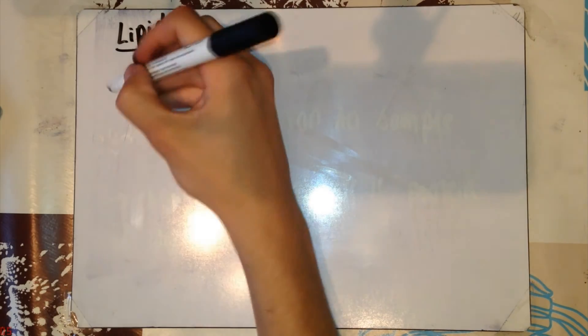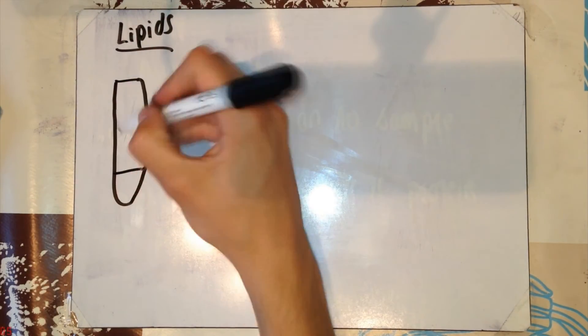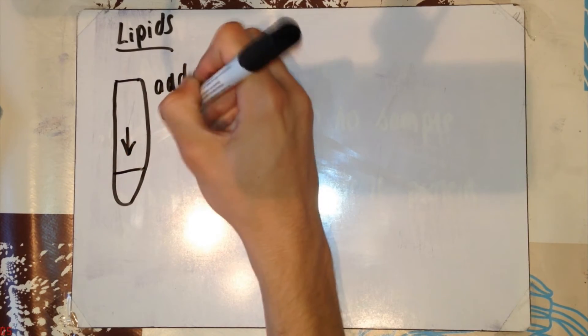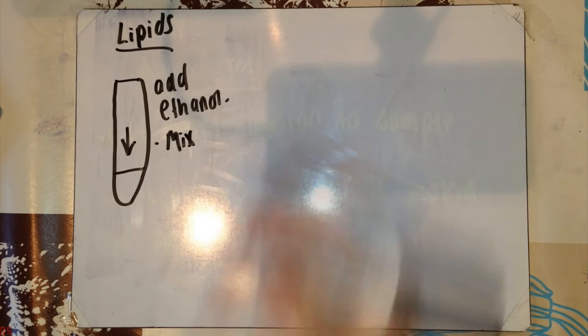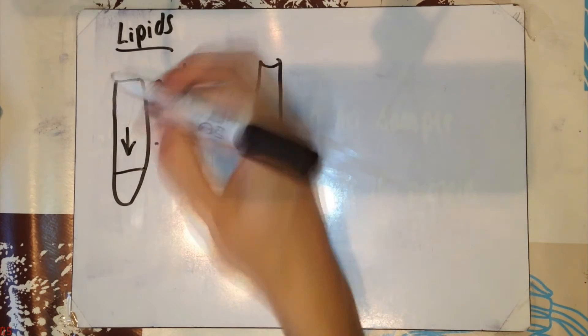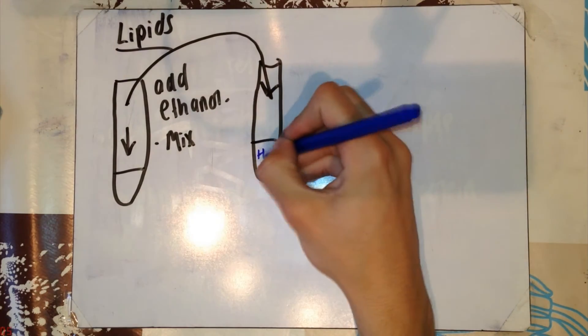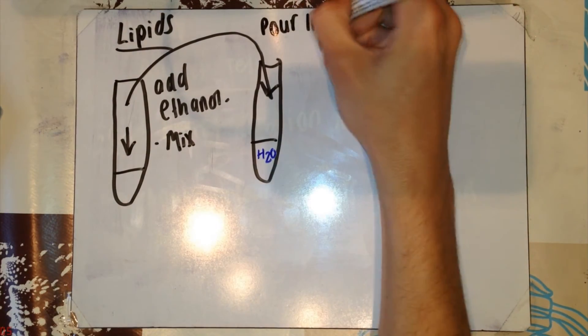Now, the test for lipids. So, you have your solution you believe may contain lipids in a test tube. There are a number of steps to this test. First of all, add ethanol to this solution and then mix it. Now, have distilled water in a clean test tube. Pour the solution you've just mixed, including the ethanol and your lipids, into this water.